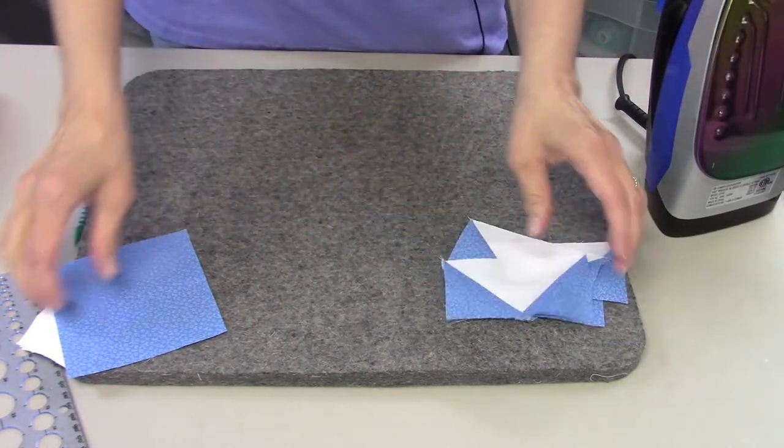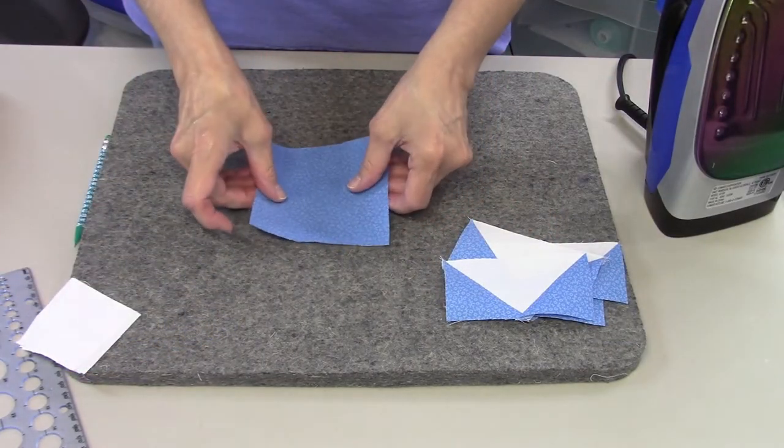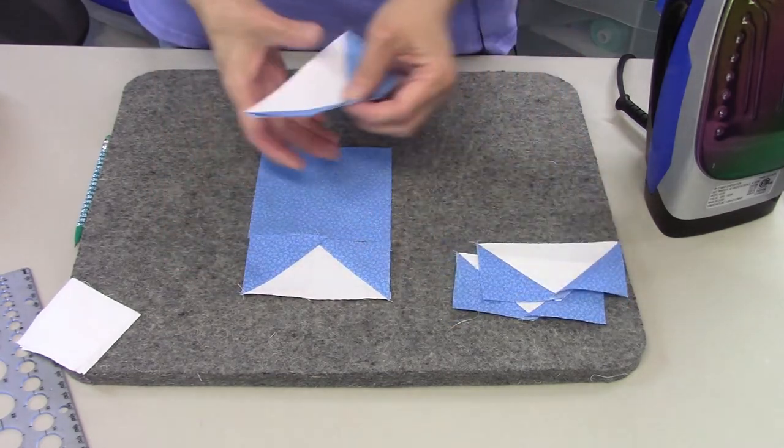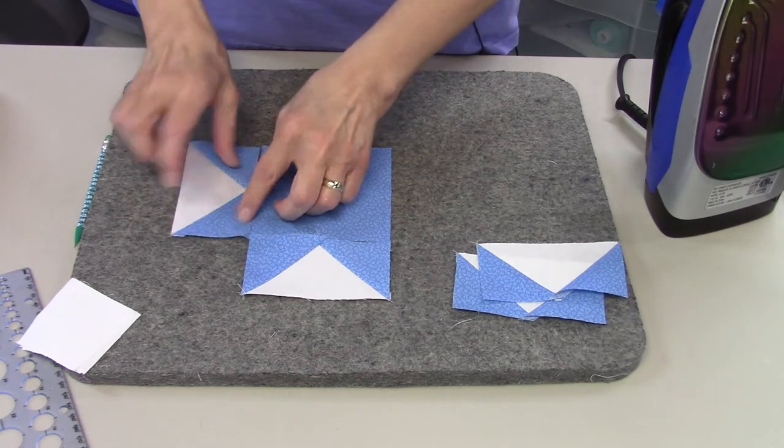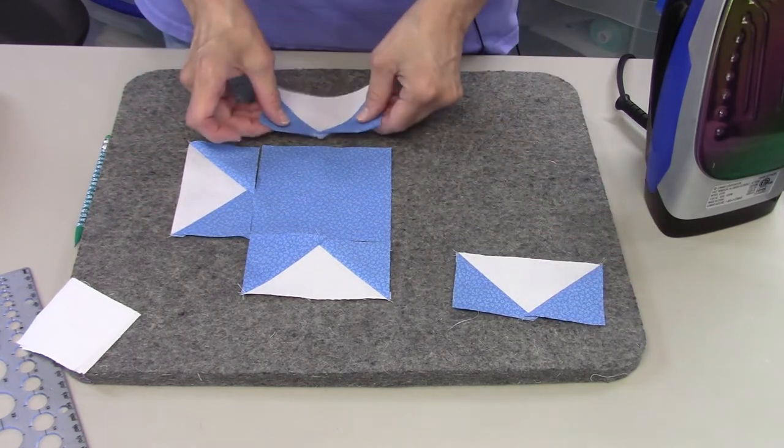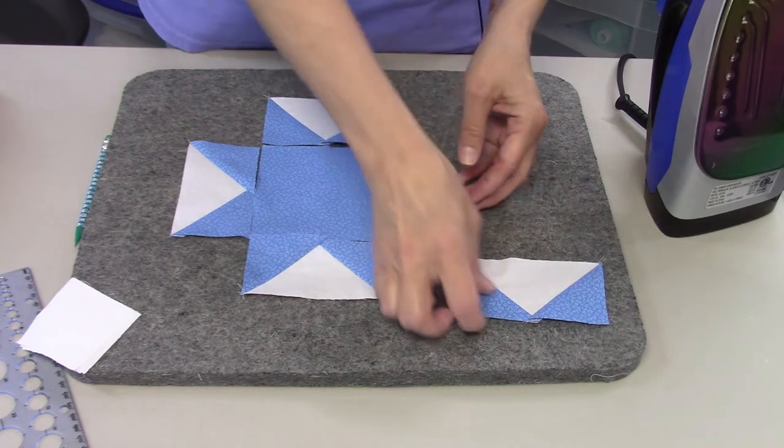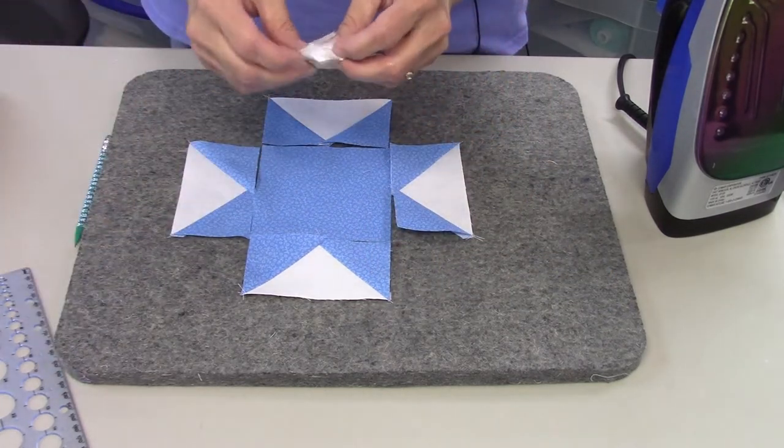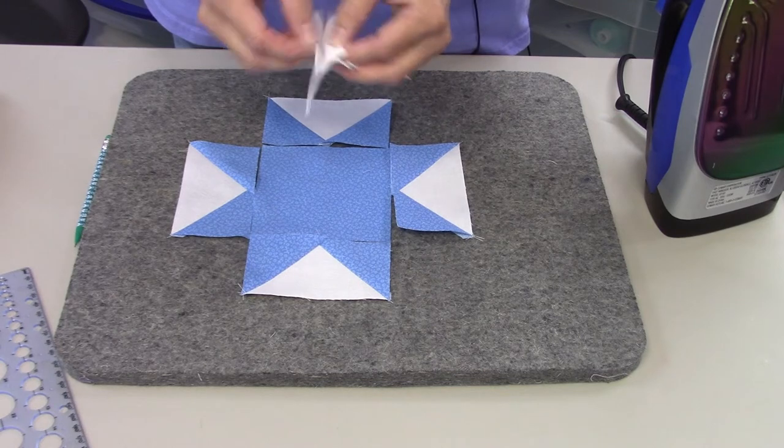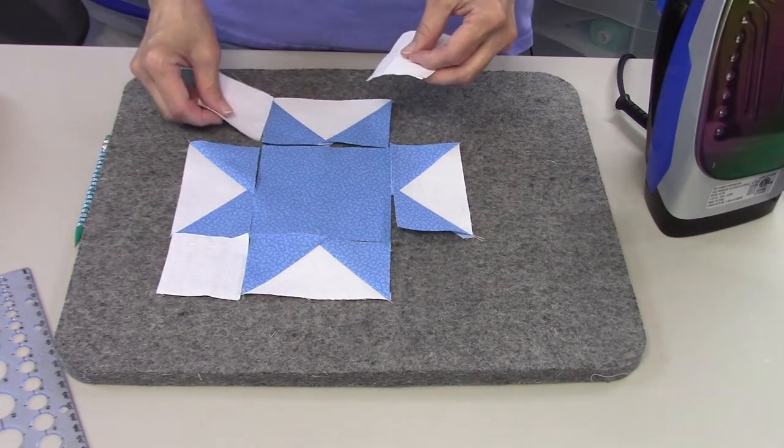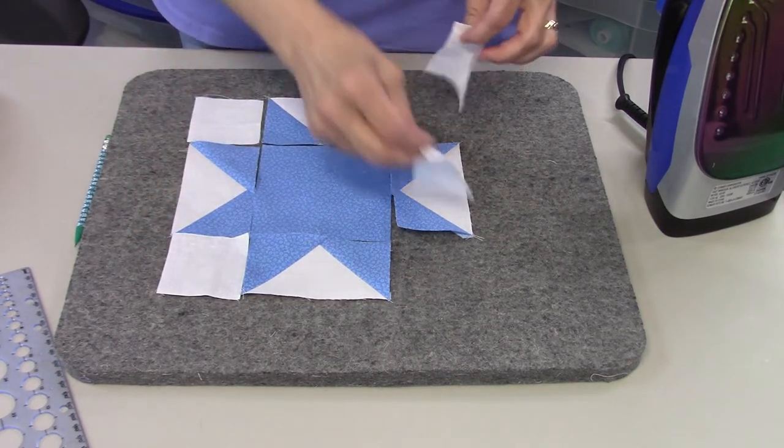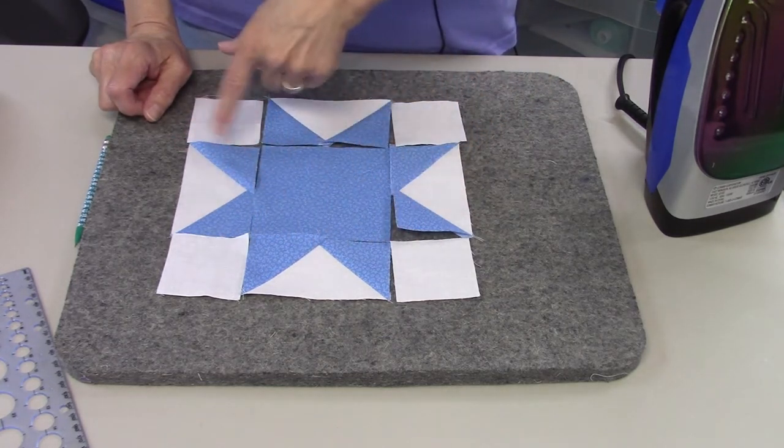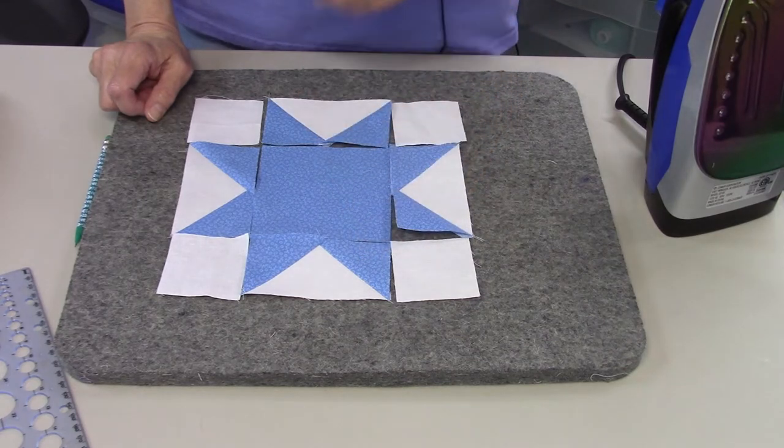Now I'm going to lay the block out and I'm going to start with the center and put my flying geese around it and they're all going to put color against color. They're all going to face that direction. So there you see the star and then fill in with the corner blocks which are just the black background color. And there is the star. So now I'm going to sew all of these pieces together in rows and then sew all the rows together.